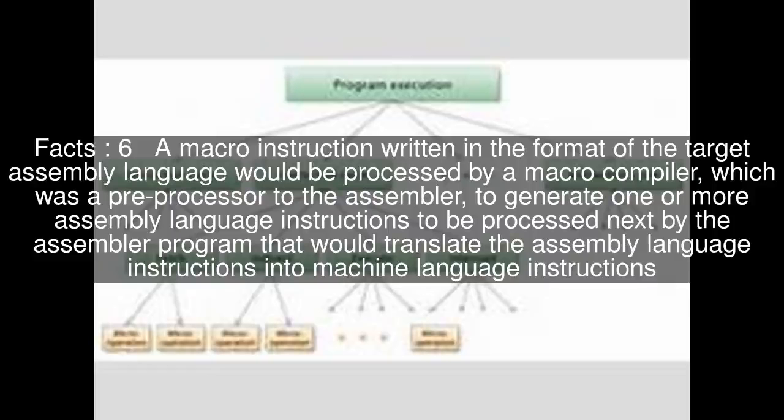A macro instruction written in the format of the target assembly language would be processed by a macro compiler, which was a preprocessor to the assembler, to generate one or more assembly language instructions to be processed next by the assembler program that would translate the assembly language instructions into machine language instructions.